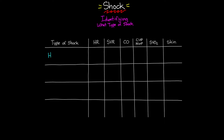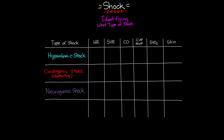The four types of shock we are going to cover are: hypovolemic, cardiogenic — which also includes obstructive shock, as those present in the same way as cardiogenic — neurogenic, which is one of our distributive shock types, and finally septic shock, another form of distributive shock. Note that anaphylactic shock is not included here as it is not commonly encountered and largely resembles septic shock with a few differences.